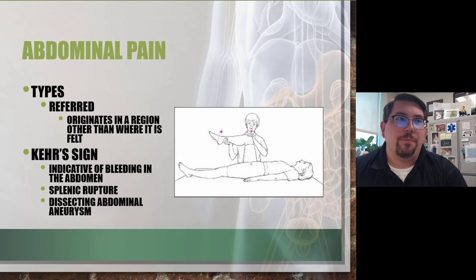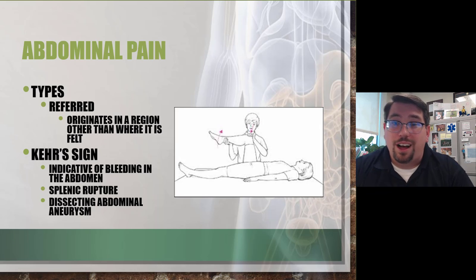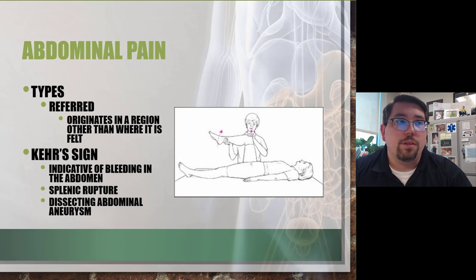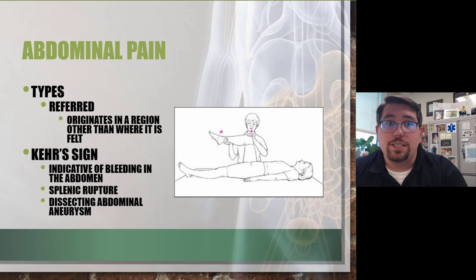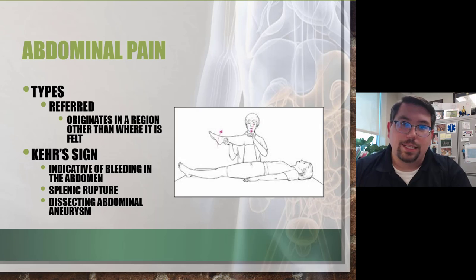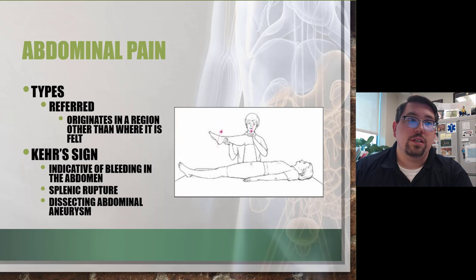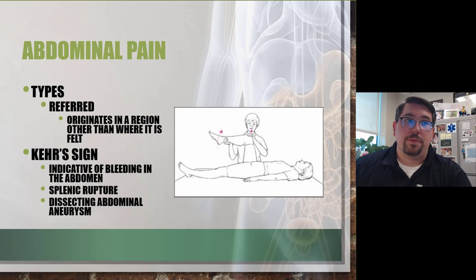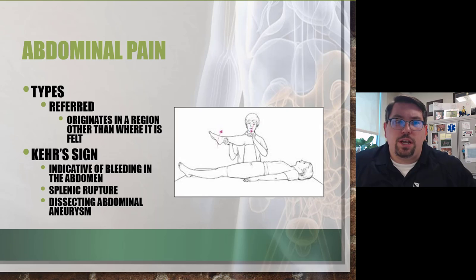If inflammation or injury of the diaphragm occurs, that pain follows the pathway up to the shoulder or through the neck. A dissecting aortic aneurysm produces pain felt between the shoulder blades — that's referred pain, not pain from where it originates. Appendicitis causes periumbilical pain, and pneumonia can even cause pain in the lower ribcage. There are many areas where referred pain can be felt.